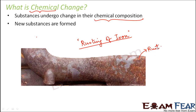Once iron gets rusted, you cannot get back the same iron — the process is irreversible. Rust is a new chemical substance, an oxide of iron. A reaction happens between iron, water, and oxygen, and as a result a new chemical substance called iron oxide is formed, which is nothing but rust. That new substance appears as a reddish coating over the iron, making it an example of a chemical change.